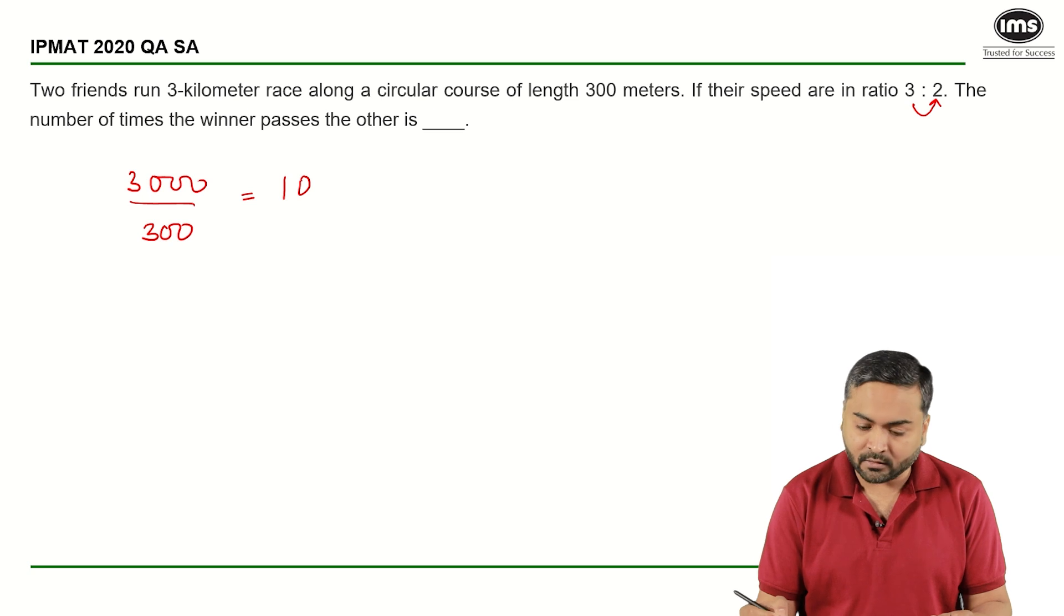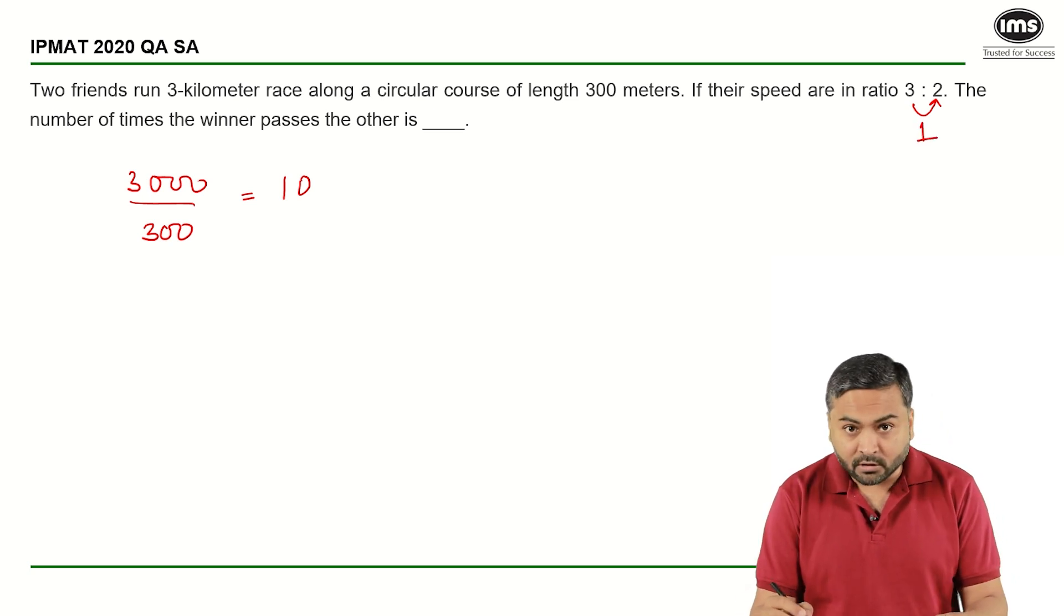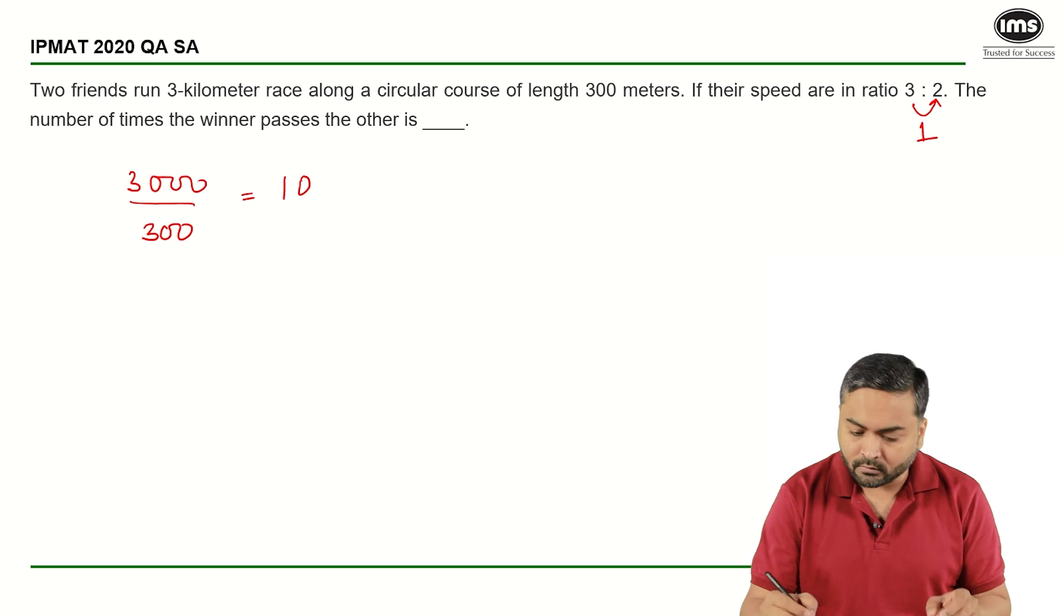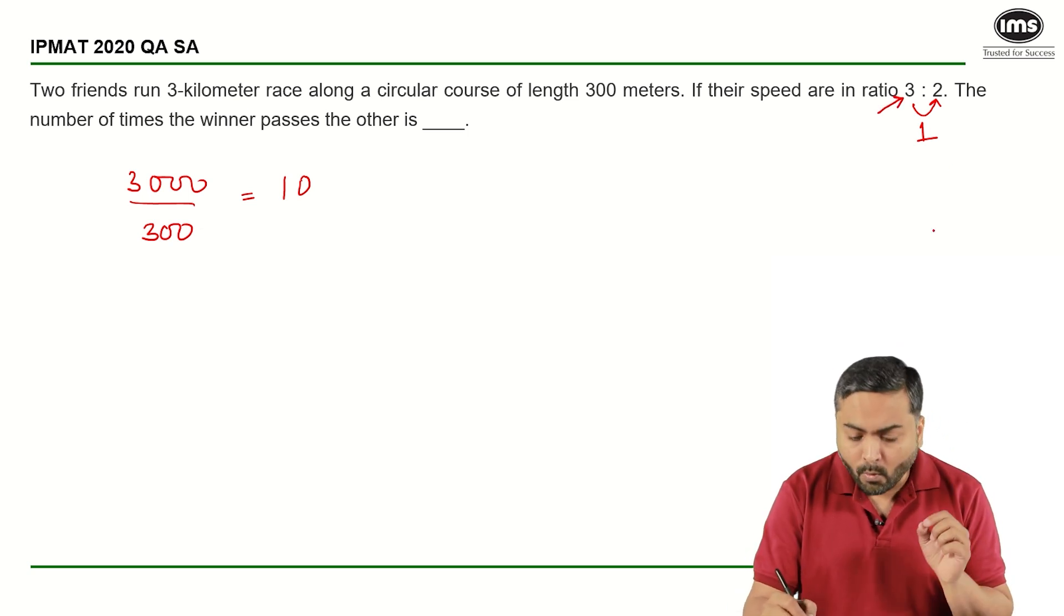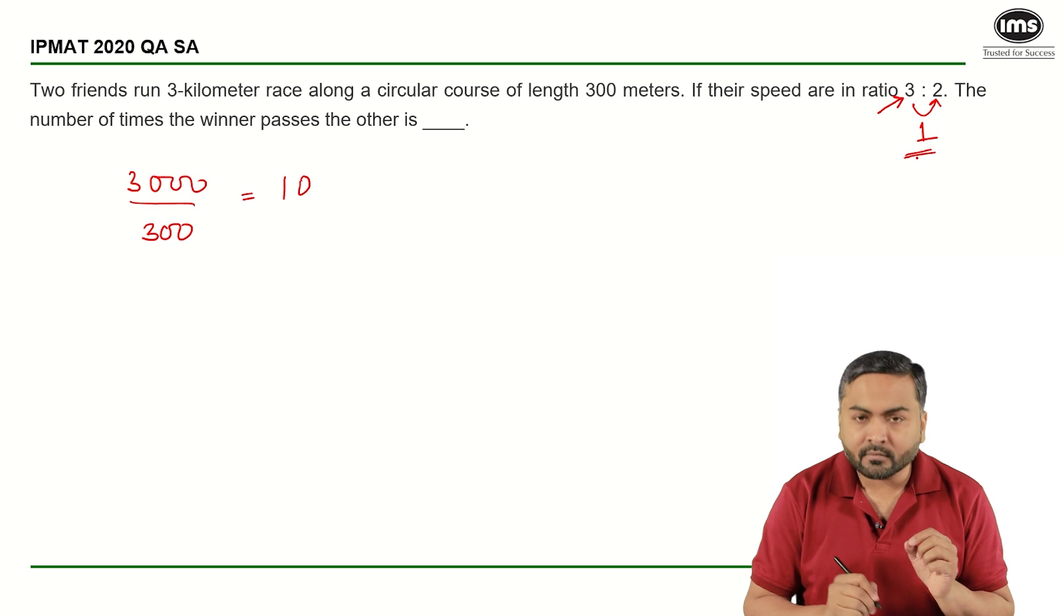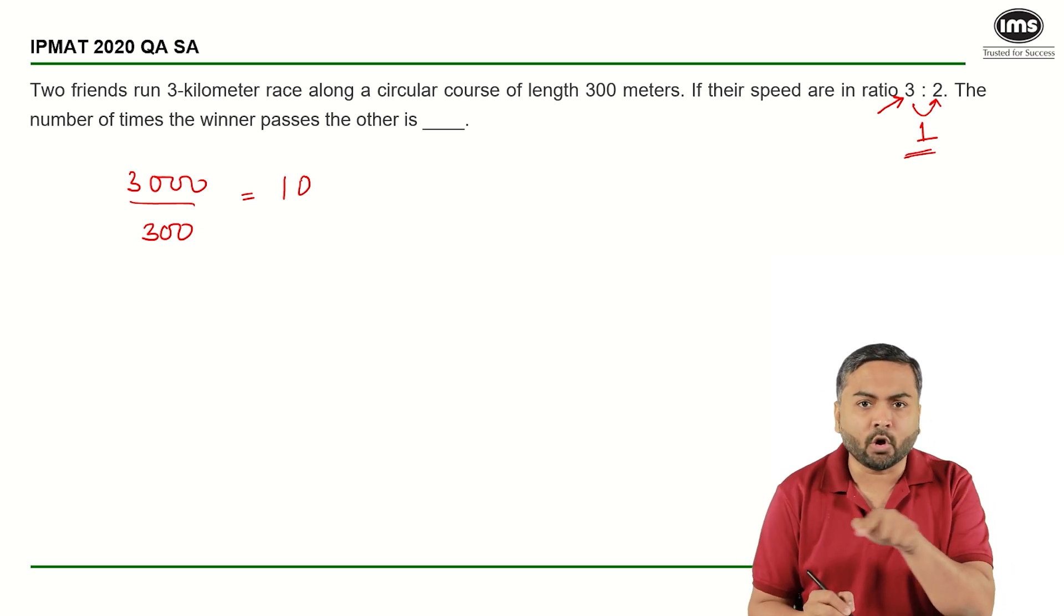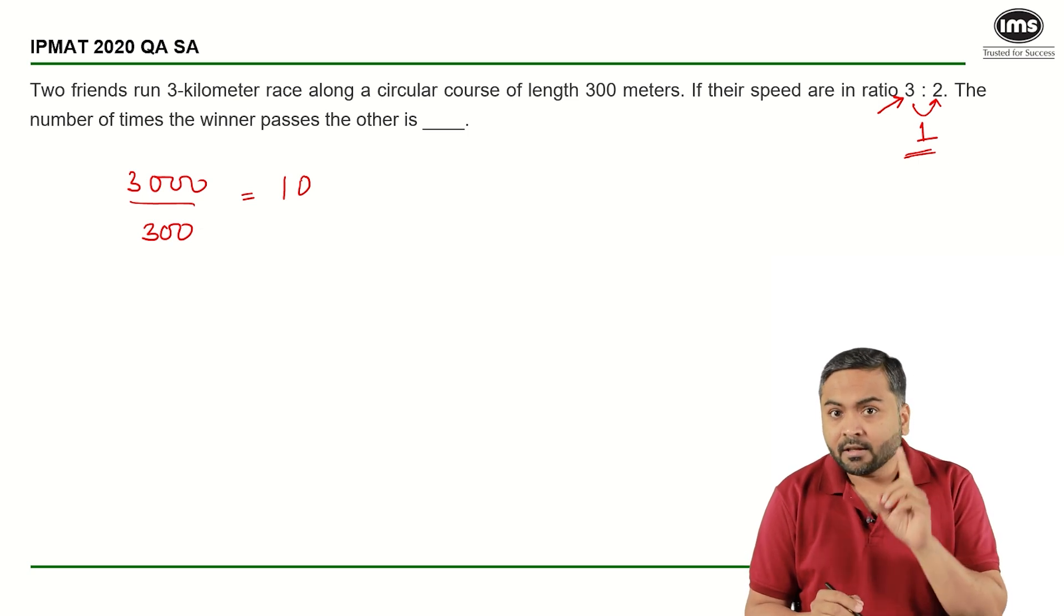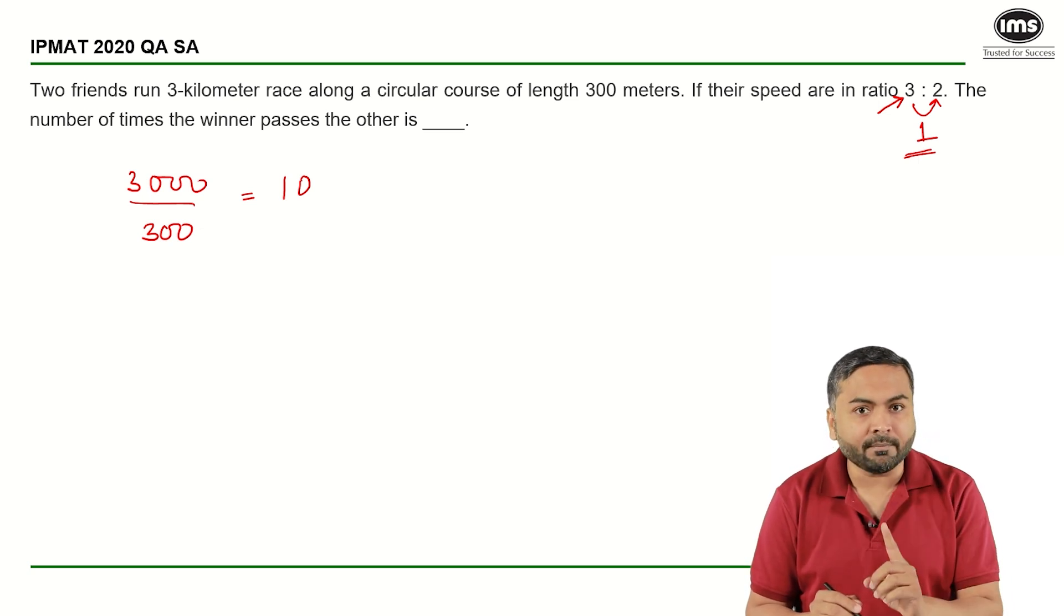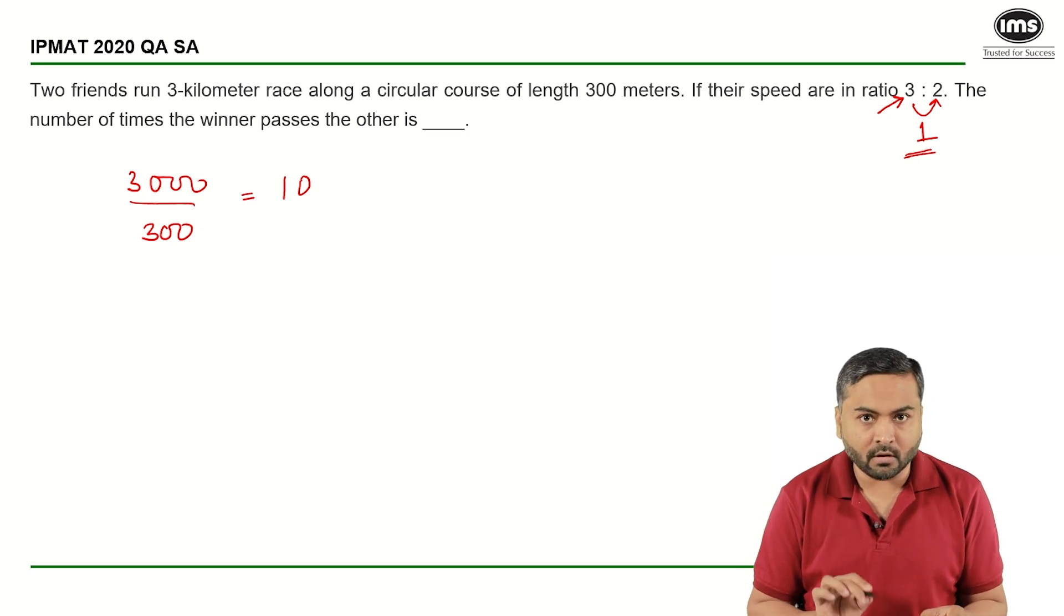If they travel in the same direction then the difference here is 1, which means the faster runner will overtake one time if he travels 3 circumferences or 3 laps. He will meet the slower runner one time if he covers 3 laps, right?